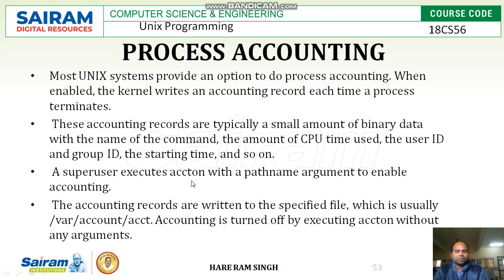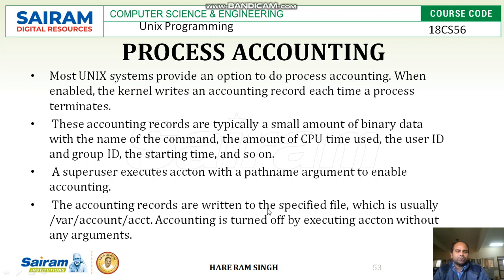A super user executes acct with a path name argument to enable accounting. Using acct on, we can enable process accounting. The accounting records are written to the specified file, which is usually /var/account/acct. All these things will be recorded in the path name /var/account/acct.